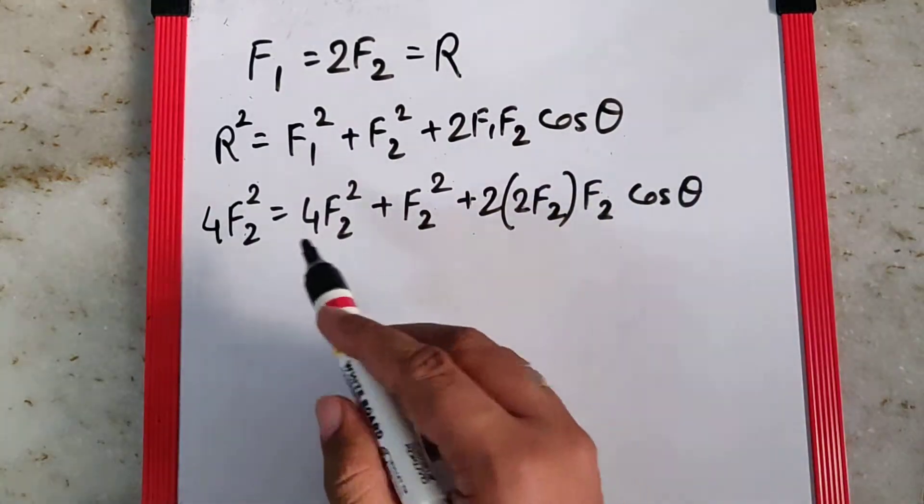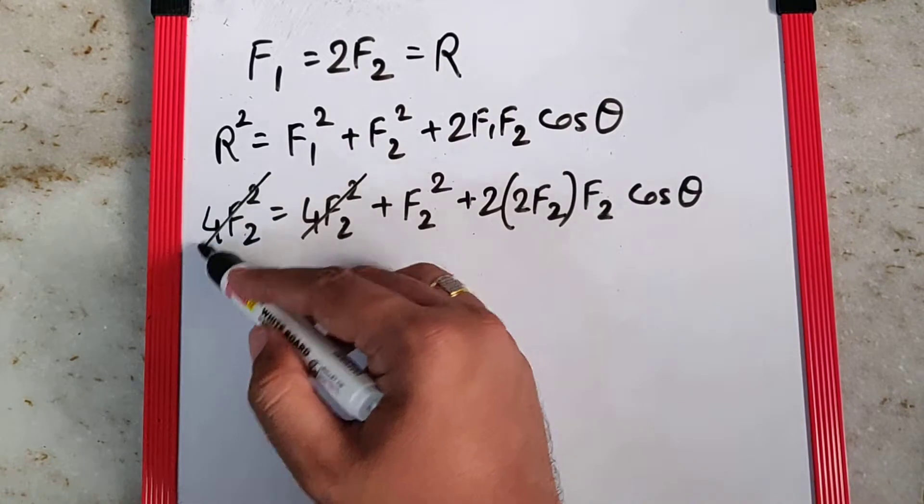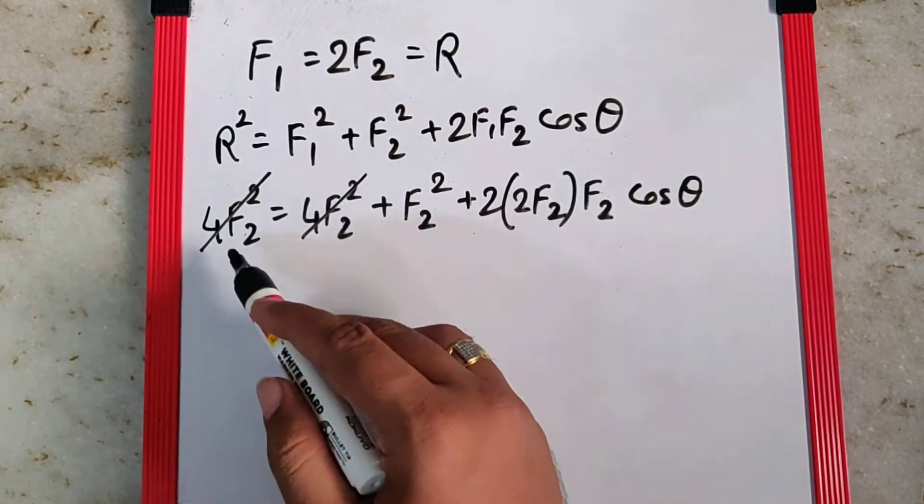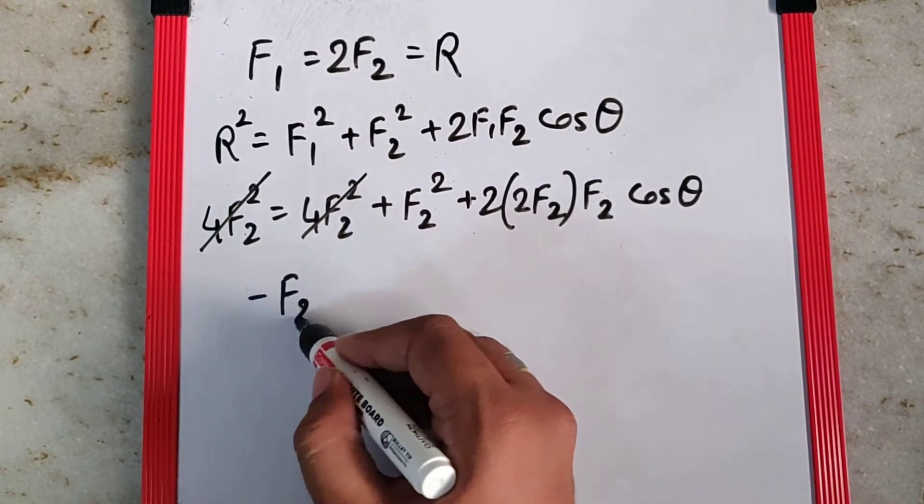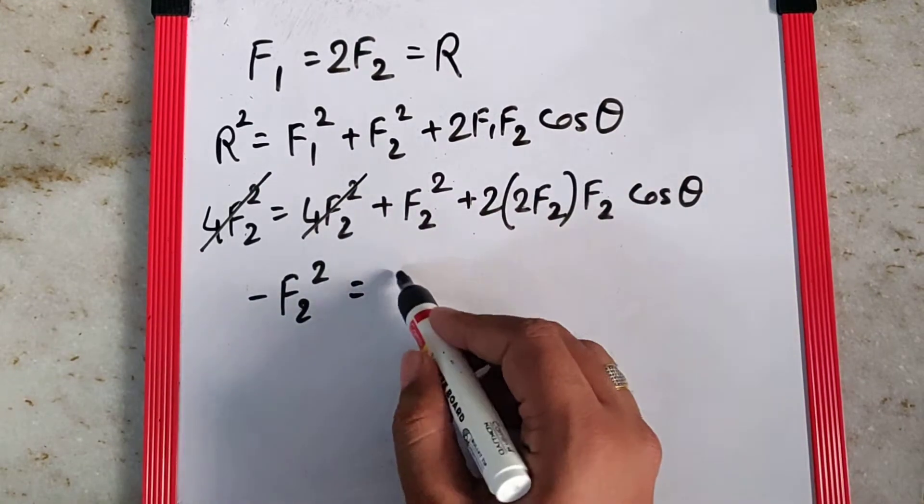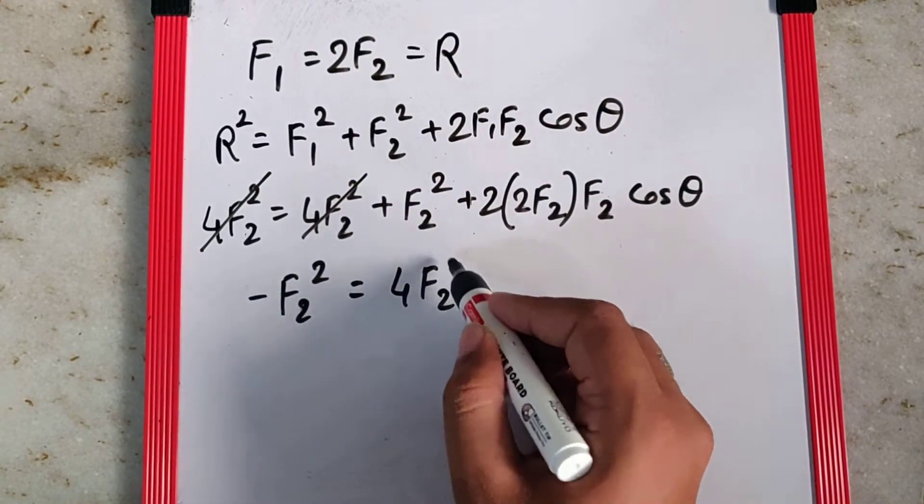The 4F2 square gets cancelled because they are the same. This F2 square on the other side becomes minus F2 square and this multiplies will give me 4F2 square cos theta.